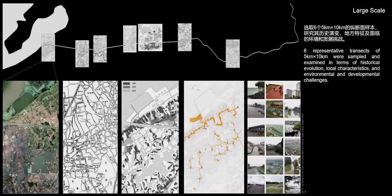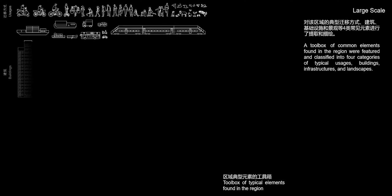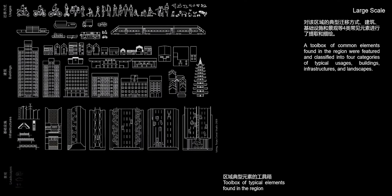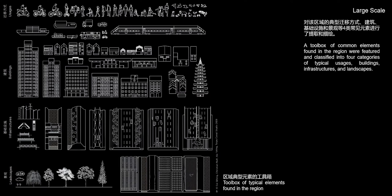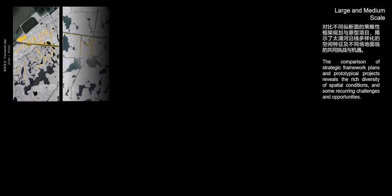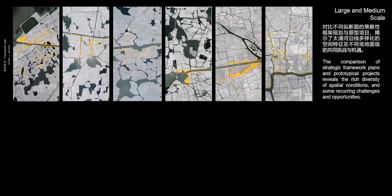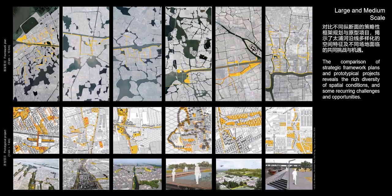Six representative transects of 5 km by 10 km were sampled and examined in terms of historical evolution, local characteristics, and environmental and developmental challenges. A toolbox of common elements found in the region were featured and classified into four categories of typical usage, buildings, infrastructures, and landscapes. The comparison of strategic framework plans of prototypical projects reveals the rich diversity of spatial conditions and some recurring challenges and opportunities.